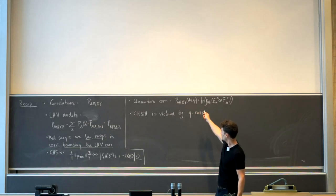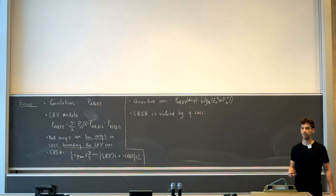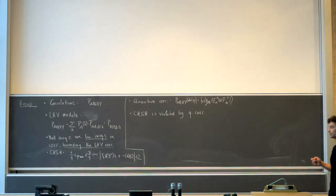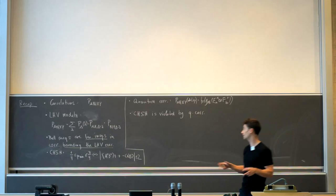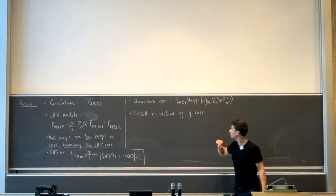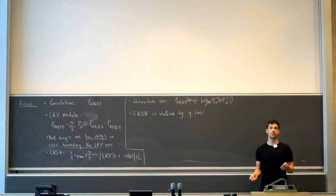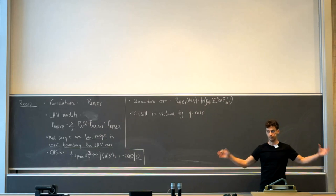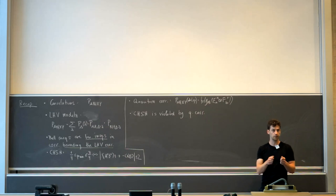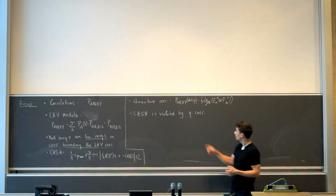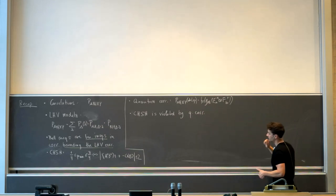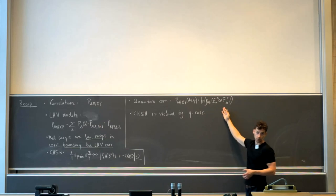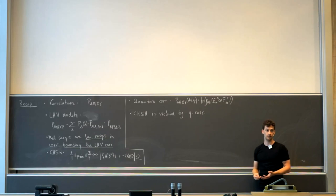We proved the bound in terms of the winning probability, then went down to quantum correlations and defined what a quantum strategy is. A quantum strategy means the two players, Alice and Bob, come together, prepare their systems in a specific state described by ρ_AB, and decide on what measurements they'll do depending on the question they receive. Then they go to their own locations, get the questions, perform a measurement, produce an outcome, and send it back to the referee. The probability distribution from these quantum strategies can be computed using the Born rule.